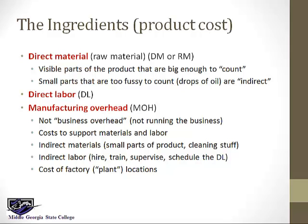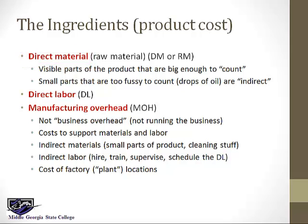First, direct material. Those are the large components, the large ingredients or parts. We leave out of the category of direct material very, very tiny parts that are too fussy to count, like drops of oil or staples or nails. We classify those in manufacturing overhead as indirect materials.